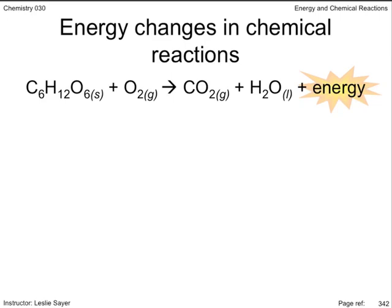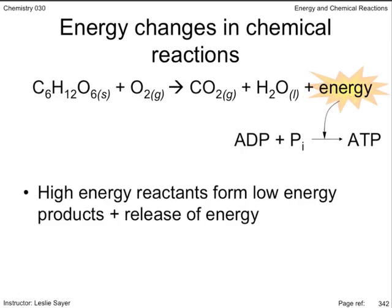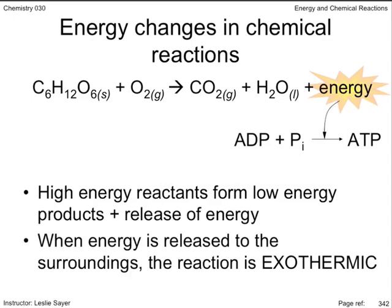In cellular respiration — the biological combustion of glucose, a high energy molecule — carbon dioxide gas and liquid water, low energy molecules, are formed and energy is released to the surroundings. In most biological systems, the energy is used in the phosphorylation of adenosine diphosphate to form ATP, the energy currency of cells. High energy products such as ATP require energy to form. Most reactions that produce products with lower chemical potential energy than the reactants are spontaneous — lower energy products are always favored. When energy is released to the surroundings, the reaction is exothermic.